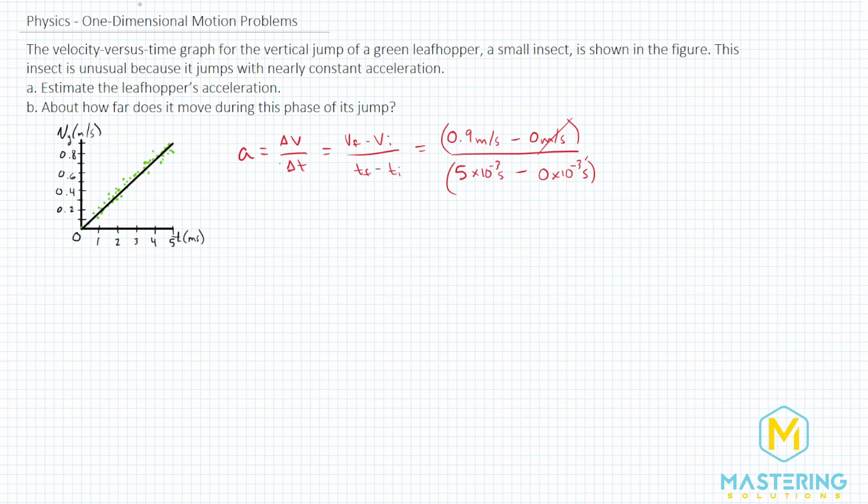So that will give us 0.9 meters per second divided by 5 times 10 to the negative 3 seconds. So if you look at the units, we have meters per second divided by seconds, which is the same as saying meters per second squared. So we can be confident that we did the math correctly because the double check of the units confirmed that we're going to get the right equation for acceleration.